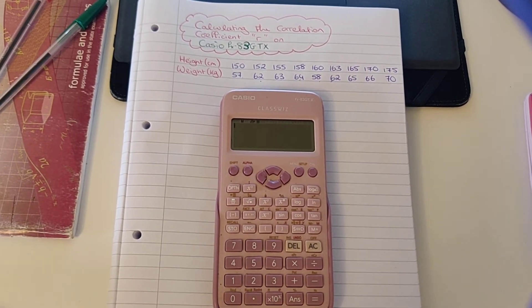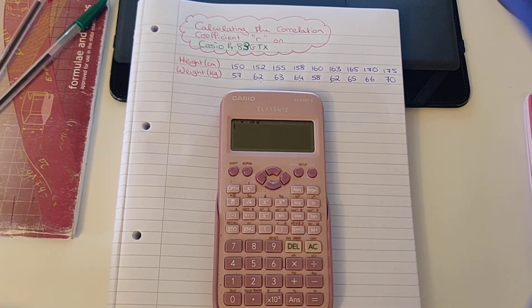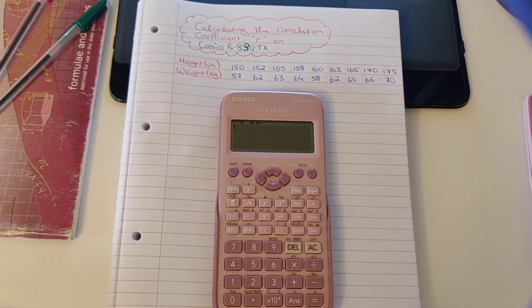To calculate our correlation coefficient, R, which tells us the relationship between bivariant data on a scatter graph.